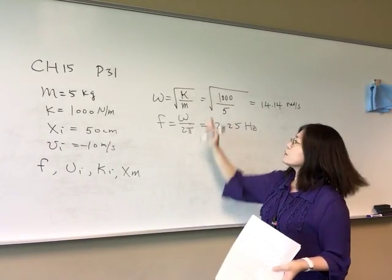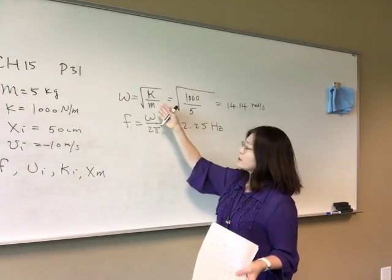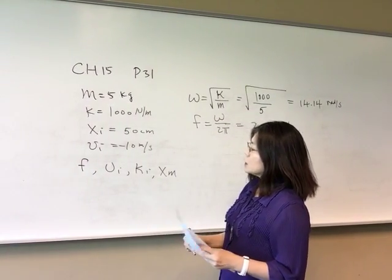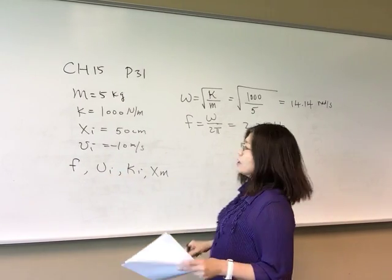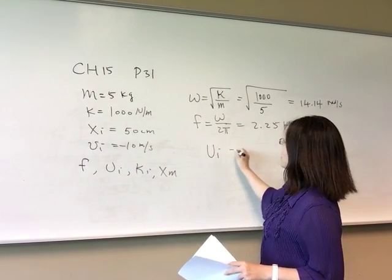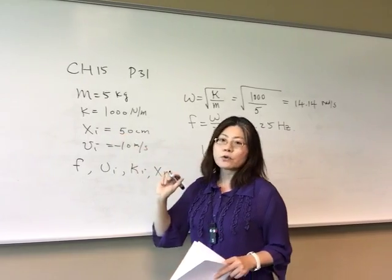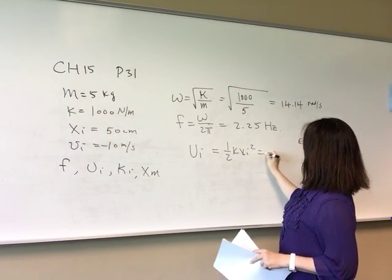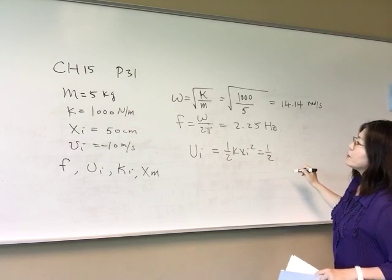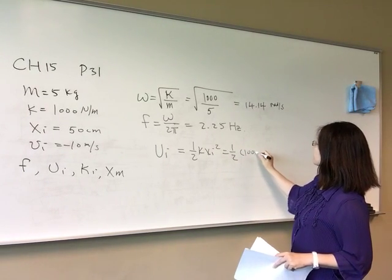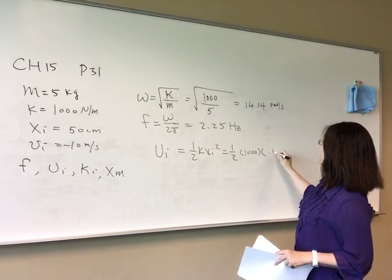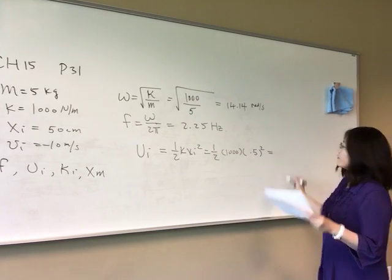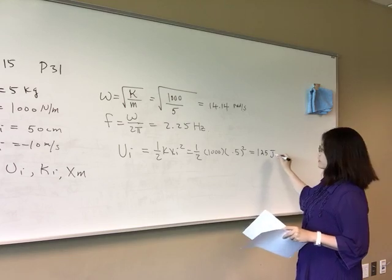This is how we calculate frequency. We are also asked to find initial potential energy. The initial potential energy uses the formula one-half k xi squared. With k equal to 1000 and x equal to 0.5, we get an initial potential energy of 125 joules.